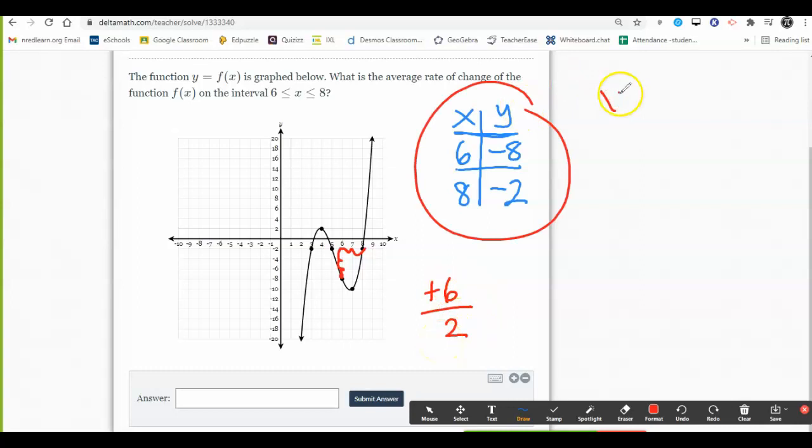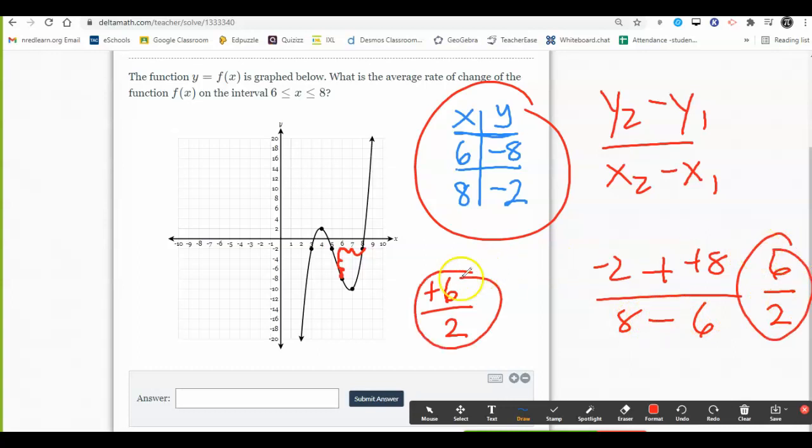Or I could use my slope formula, and it works for any average rate of change. The first thing you do is set up your subtraction fraction: y minus y over x minus x. And it looks like I'm going to get a positive 6 and a positive 2, which is the same solution.